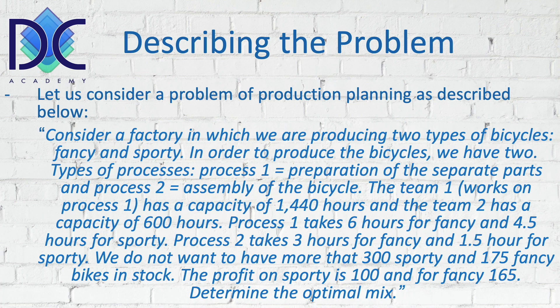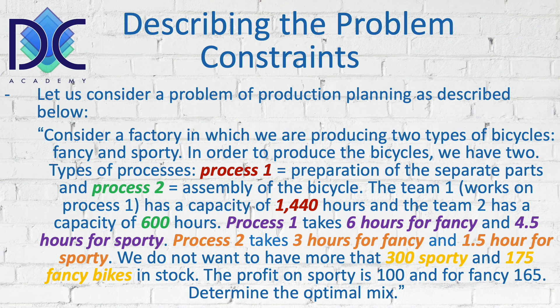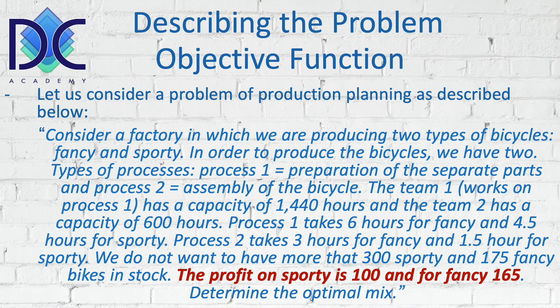The profit on the sporty is 100 and on a fancy it's 165. Determine the optimal mix. First, we have to look at the problem itself and identify the constraints. We find process one with 1440 hours available, process two with 600 hours available, and the time requirements per bike type. We also have the constraint that we cannot have more than 300 sporty or 175 fancy bikes.